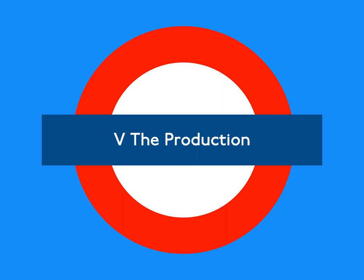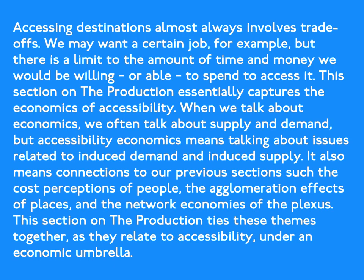Part 5: The Production. Accessing destinations almost always involves trade-offs. We may want a certain job, for example, but there is a limit to the amount of time and money we would be willing or able to spend to access it. This section on the production essentially captures the economics of accessibility, tying together induced demand, induced supply, cost perceptions, agglomeration effects, and network economies under an economic umbrella.